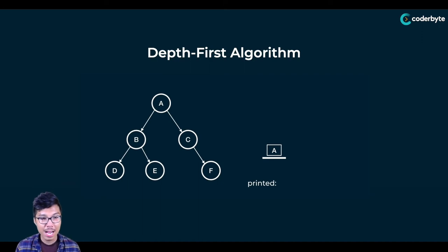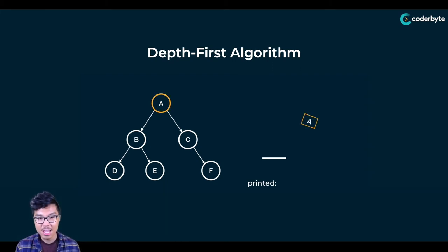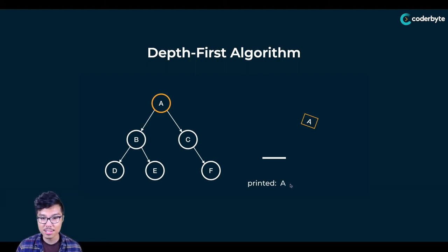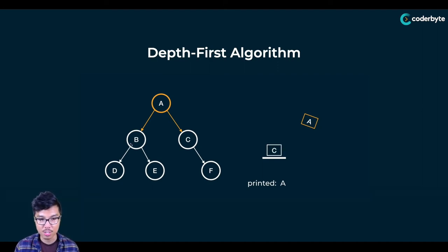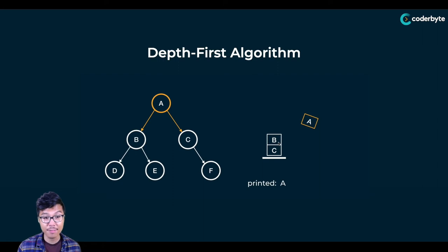So A is on the stack and we begin the algorithm. I pop the A node — popping means I'm visiting it, so I print it out. Now I look at A's children and push them onto the stack: I push C first, then B, so B ends up on top. Pushing the right child first ensures the left child is at the top, so we explore the left side first. That ends the first iteration.